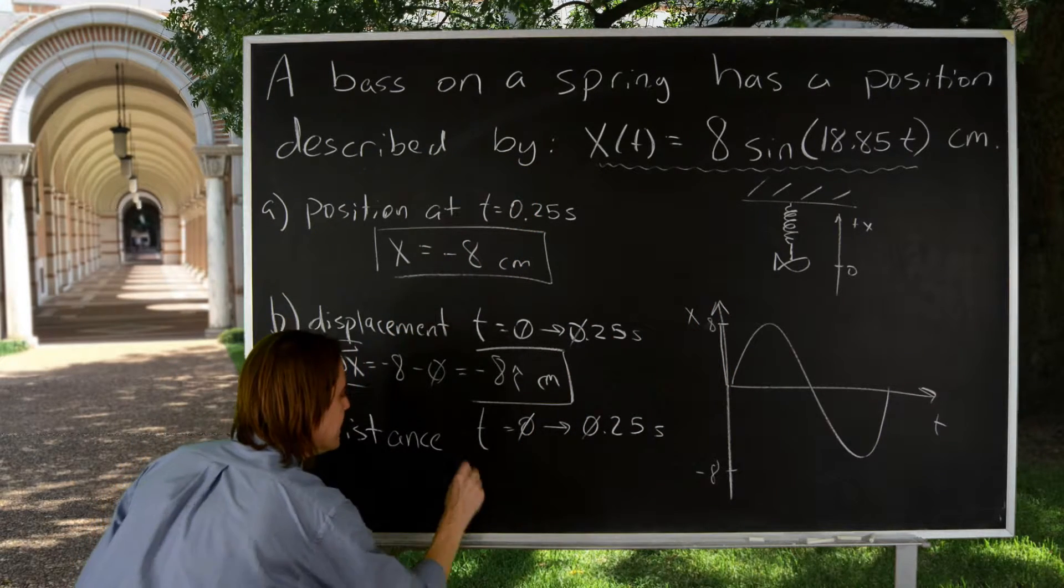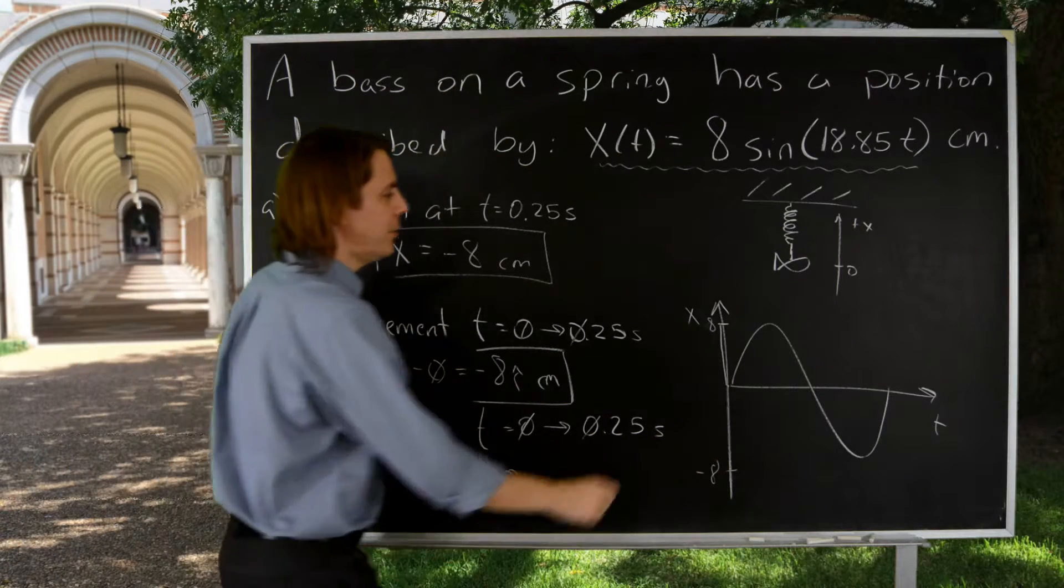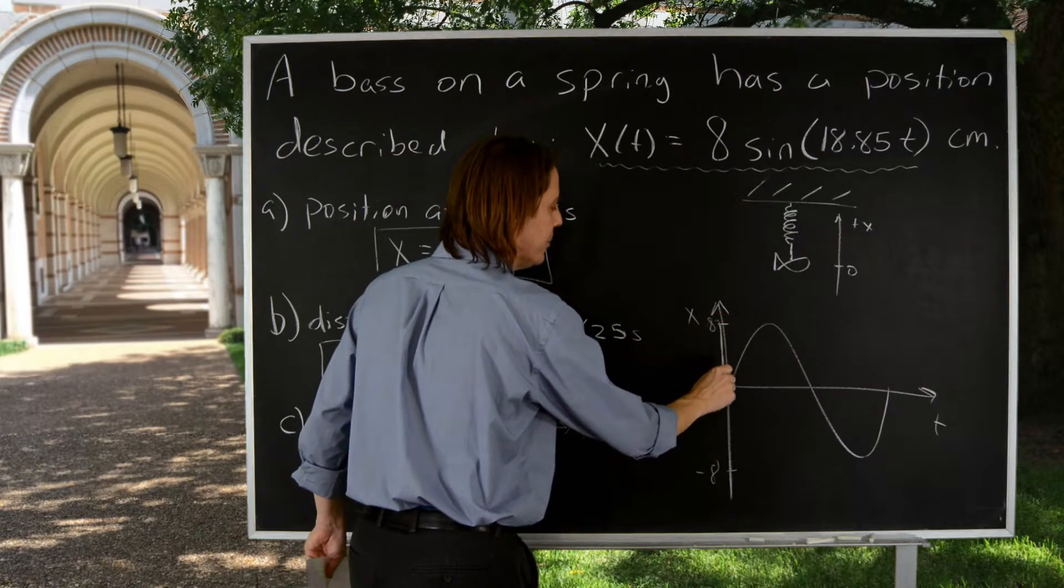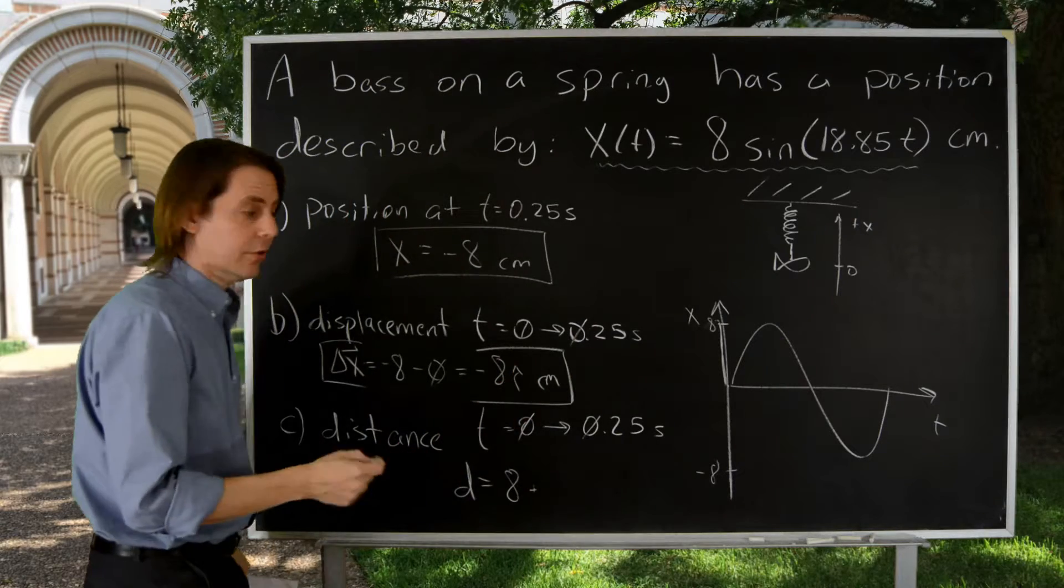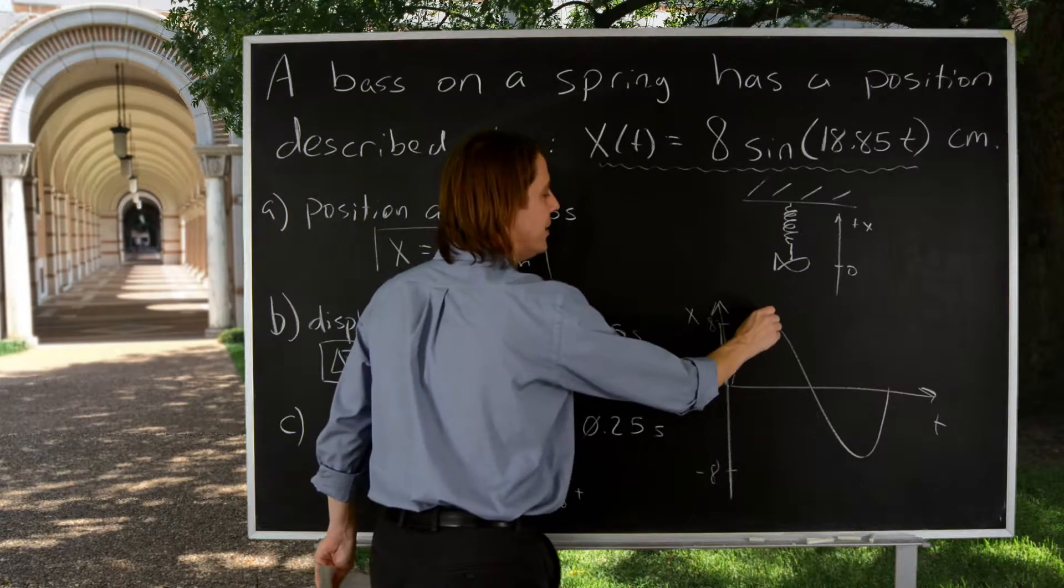So D distance, and did an initial eight. And then it went down. And distance doesn't care if it's positive or negative. It went another eight. All right, up eight, down eight.